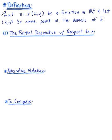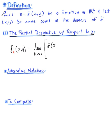We let the ordered pair (x, y) be some point in the domain of our function. We have two partial derivatives because we have two independent variables. The partial derivative of f with respect to x at some point (x, y) is equal to the limit as h approaches 0 of the difference quotient: f(x + h, y) minus f(x, y), all divided by h.